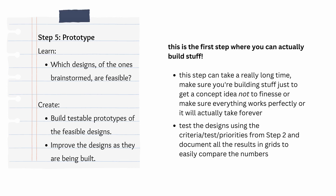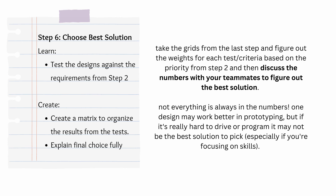Step five is about prototyping — which of all the brainstormed designs are actually feasible? You want to build testable prototypes of all of the feasible designs while trying your best to satisfy all the requirements from step two. You can try to improve the designs as they're being built, which is called adaptive prototype development. After building, test each design against the threshold scenarios you made in step two, and then organize all of those results in a decision matrix. Apply your priority weights and explain your choice fully in the documentation. Make sure to talk the results over with your teammates before choosing a design, because not everything is in the numbers — one design might be numerically superior but could be very complicated to drive or unreasonably difficult to program. Whatever you do, make sure to explain it fully in your engineering notebook.